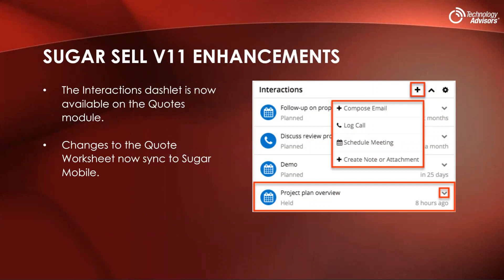For Sugar Sell enhancements: the interactions dashlet, which has been available on accounts, contacts, leads, and opportunities modules for a while, has now been added to the quotes module. The interactions dashlet displays calls, meetings, emails, and notes with the most recent interactions on top. The quote worksheet — where you add line items and Sugar calculates the sum plus tax and shipping — now syncs its layout to mobile. After upgrading to version 11, the administrator must resave the quote configuration for the layout to be applied to the mobile app.